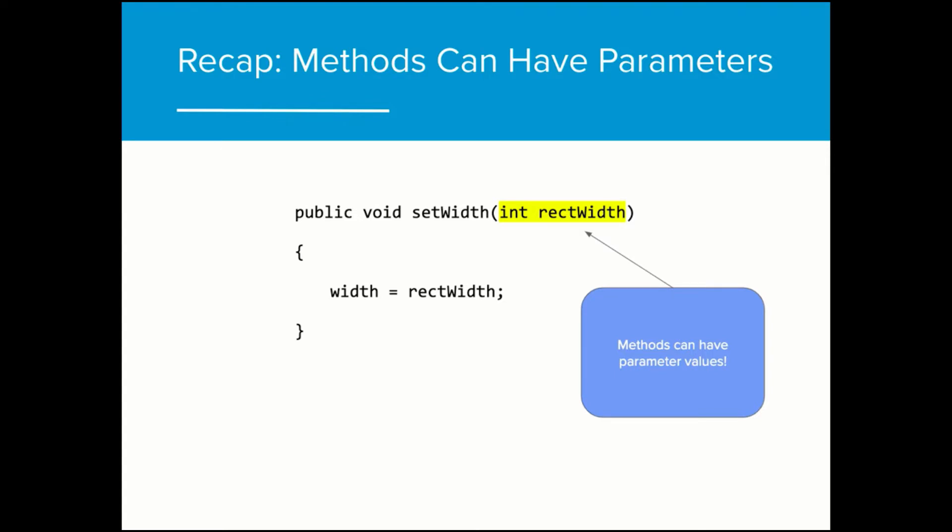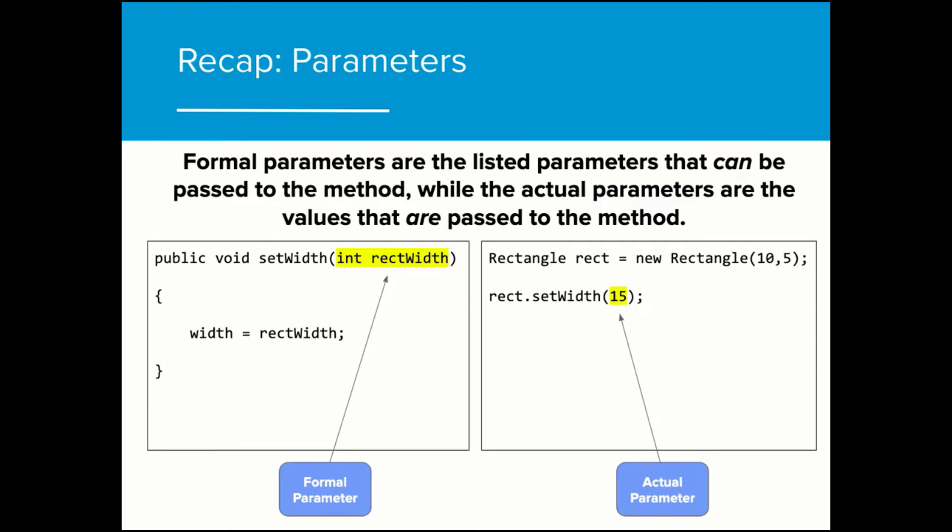In the second unit of the course, we learned that methods can have parameters. When writing a new method signature, the parameters that we include in the method signature are referred to as the formal parameters. When we input real values into the parameter list, those real values are referred to as actual parameters.